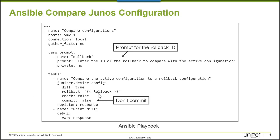The diff output is stored in a register named response. The next task simply uses debug to print the response. This is how I view the diff between the current active configuration on a Junos device — VMX1 in our case — and a specified rollback. I'm going to connect to my Ansible workstation now and we'll see how this works.